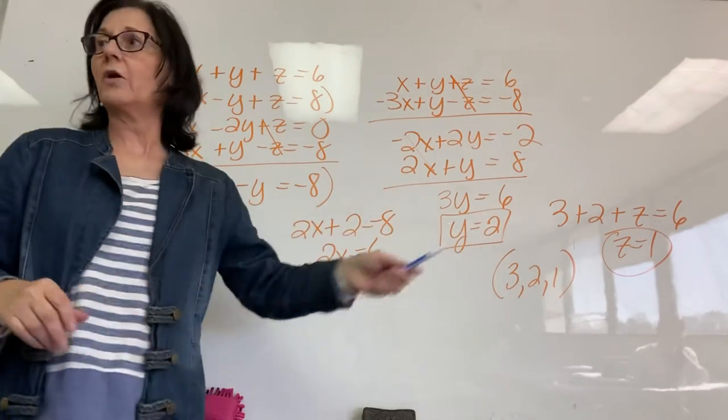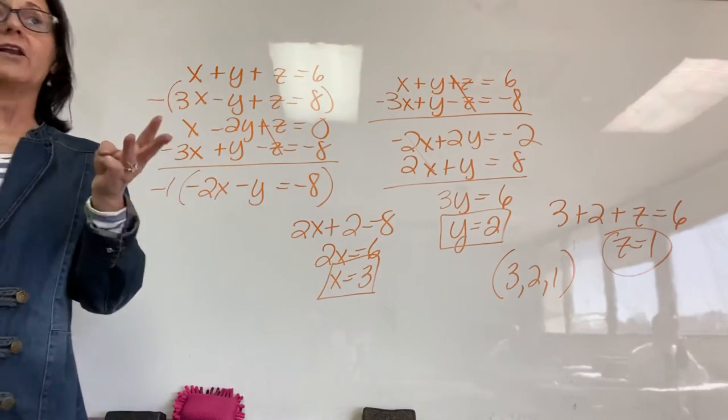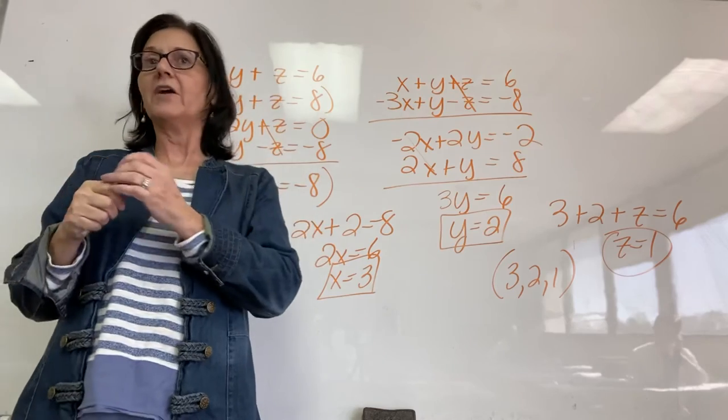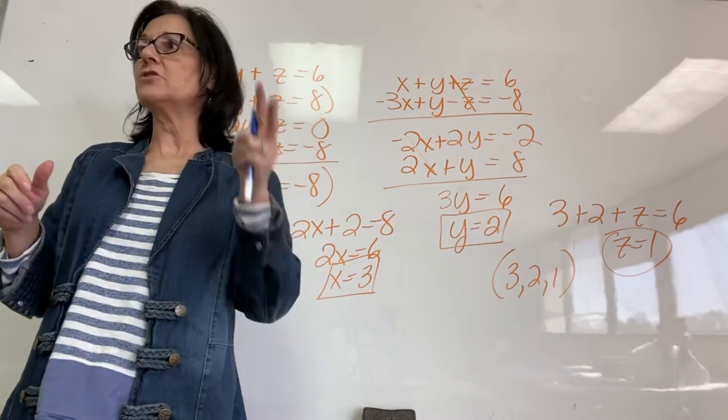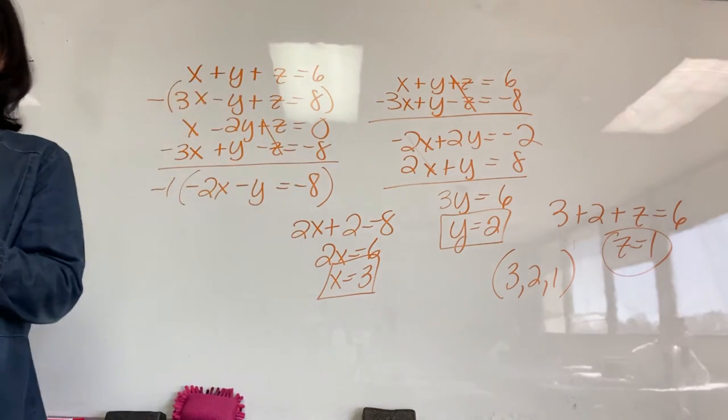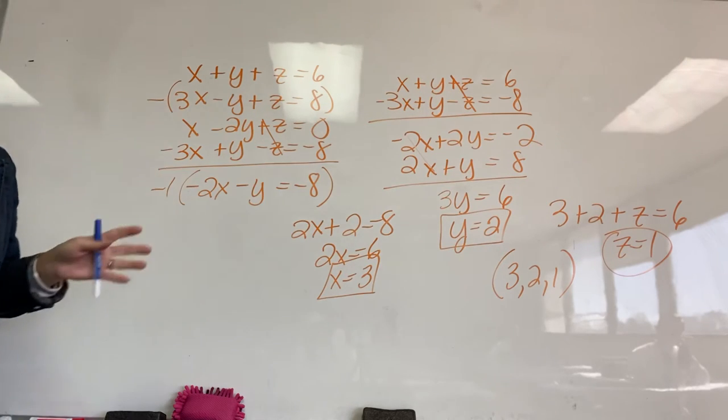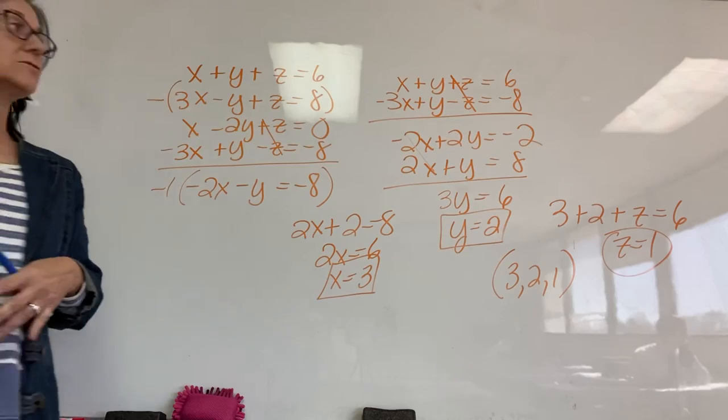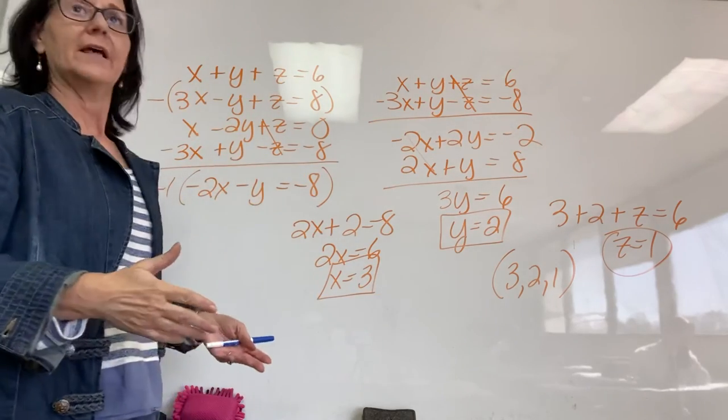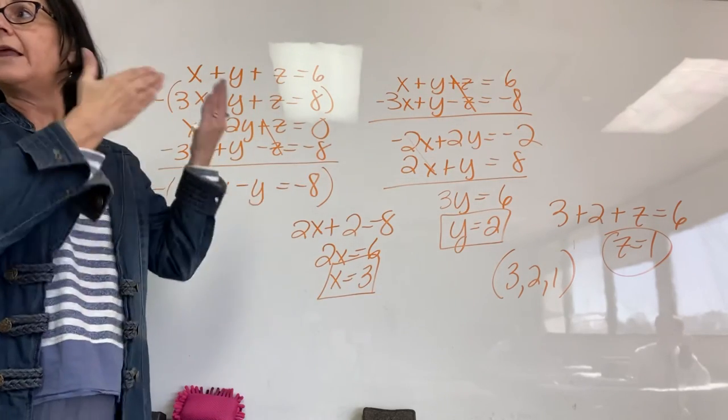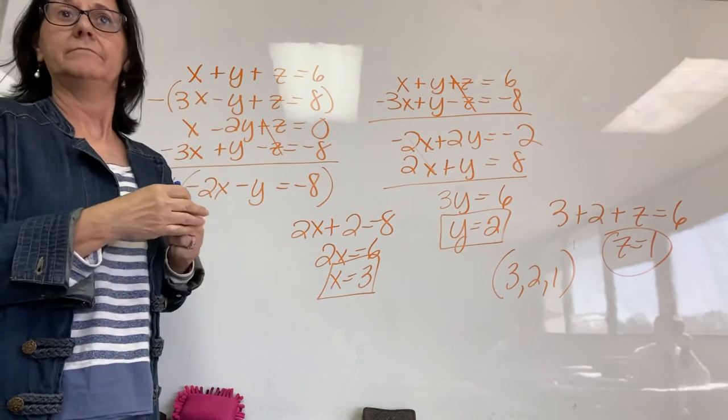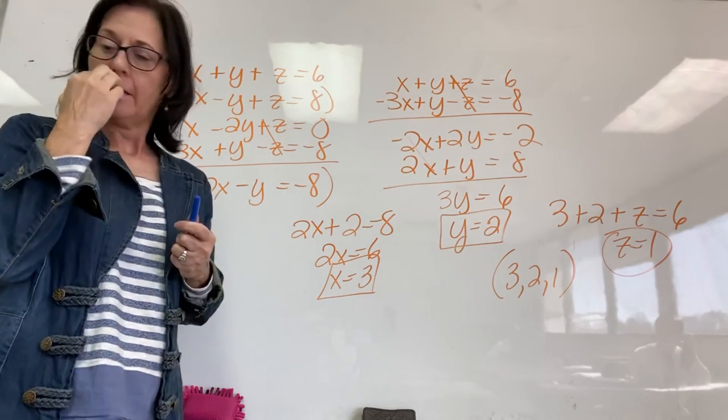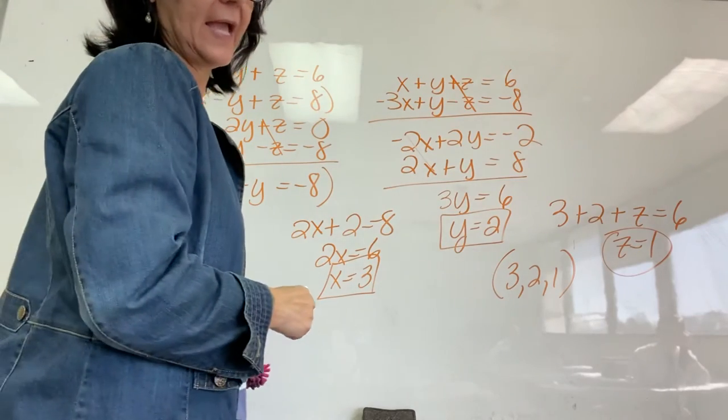Does this make sense, guys? What are we doing? First, we're taking all three equations. We're using all three to eliminate one of the variables and have two equations with two variables. Then, we're using elimination to solve for one of the variables. Then, we work our way back up, plugging them in. All right. All right. Number 8. That was 8. All right. We'll work number 9.